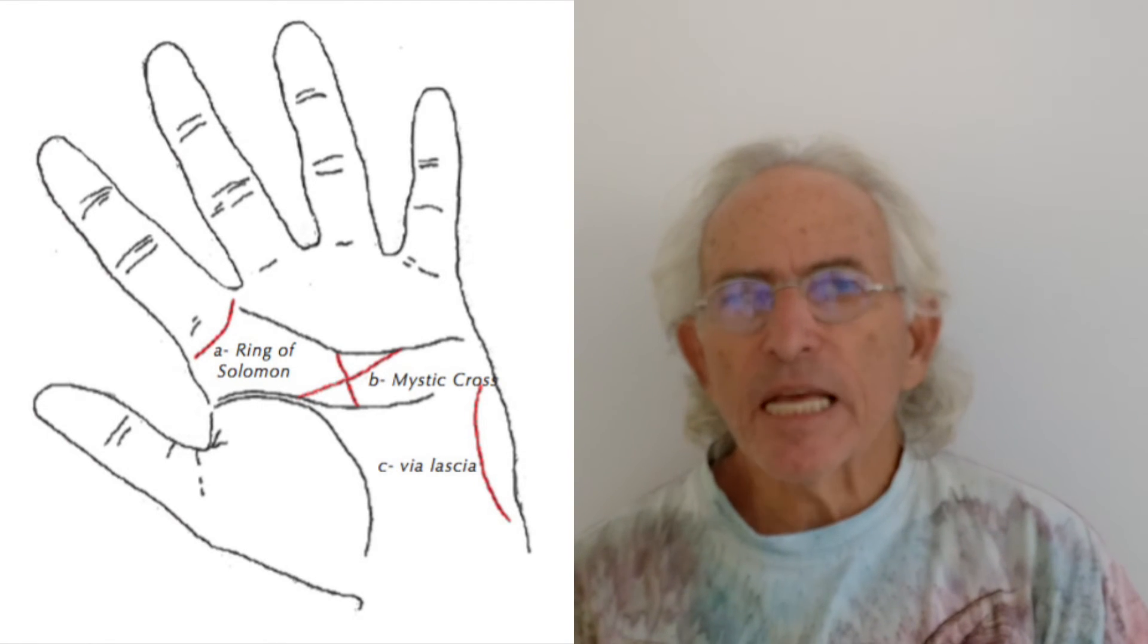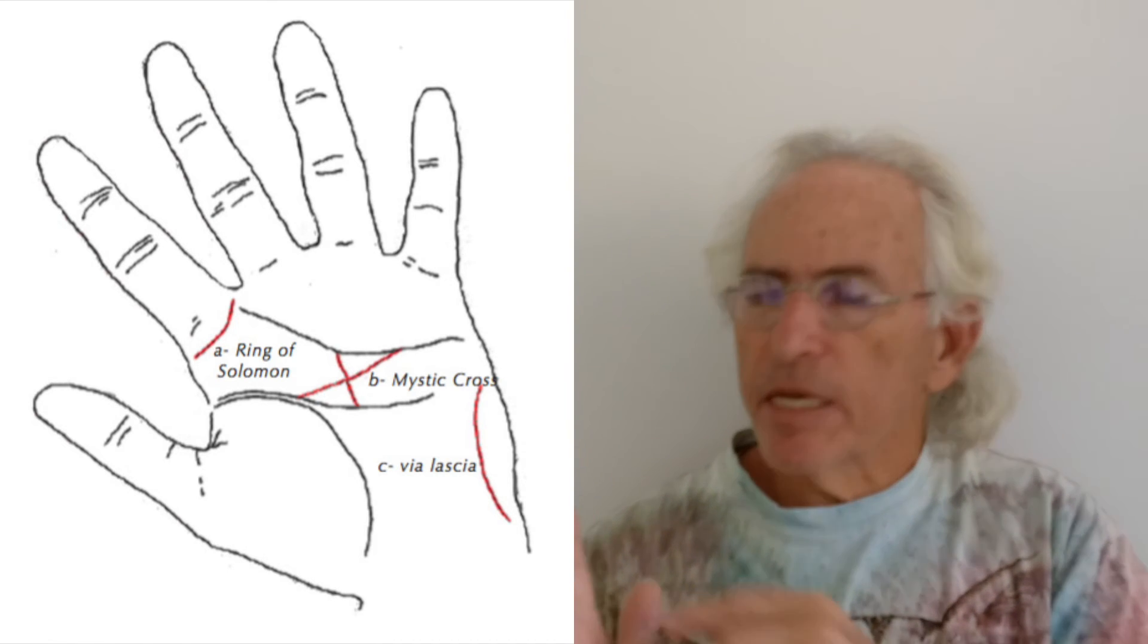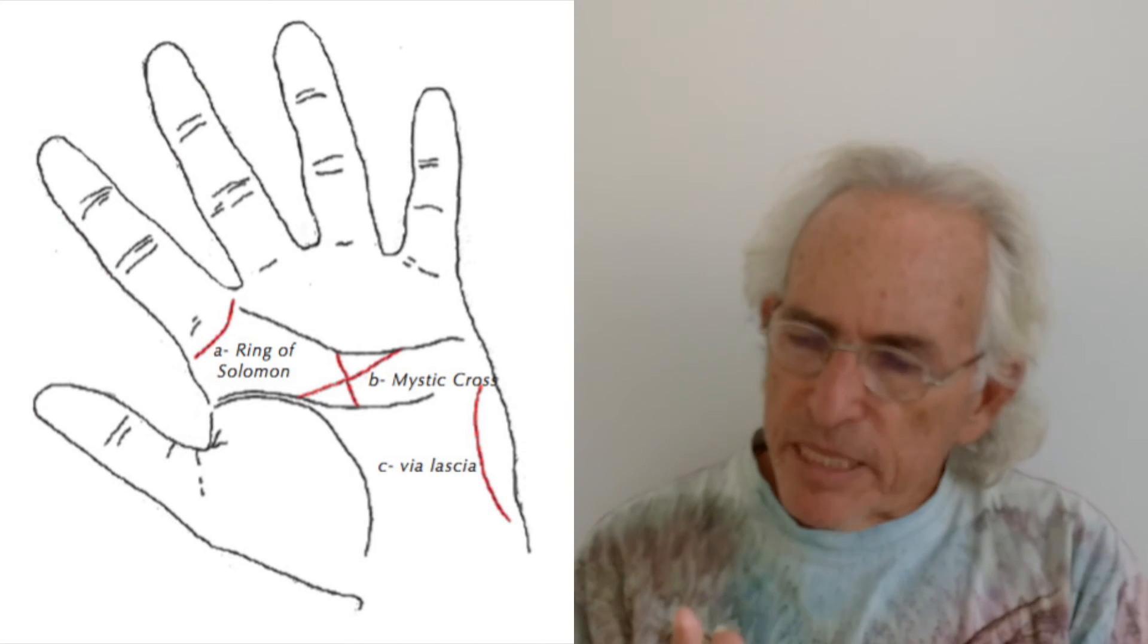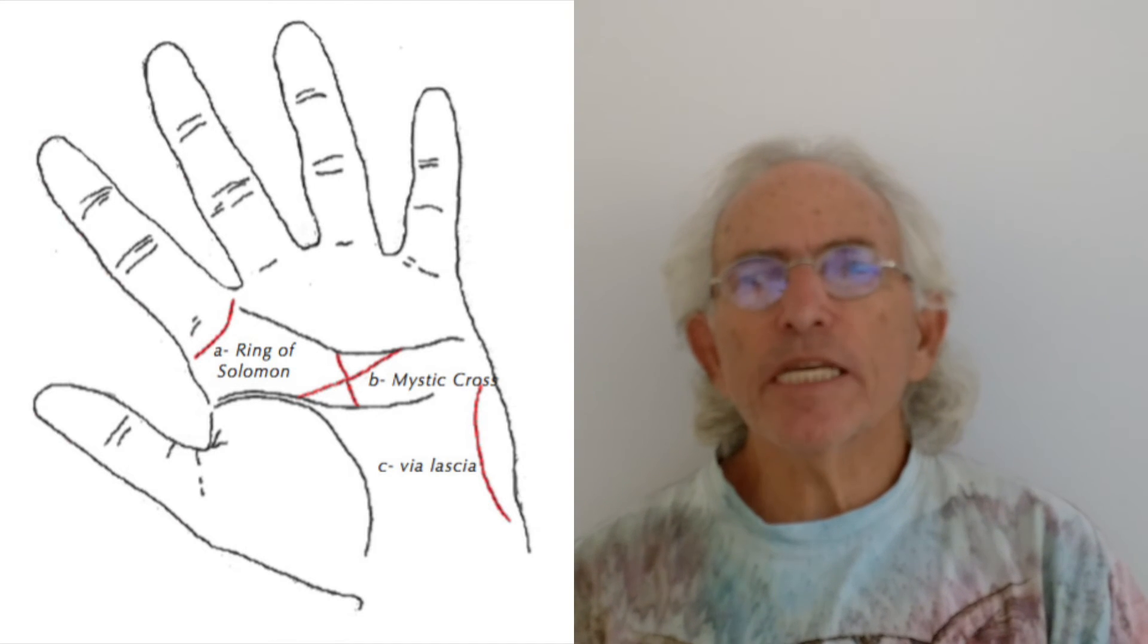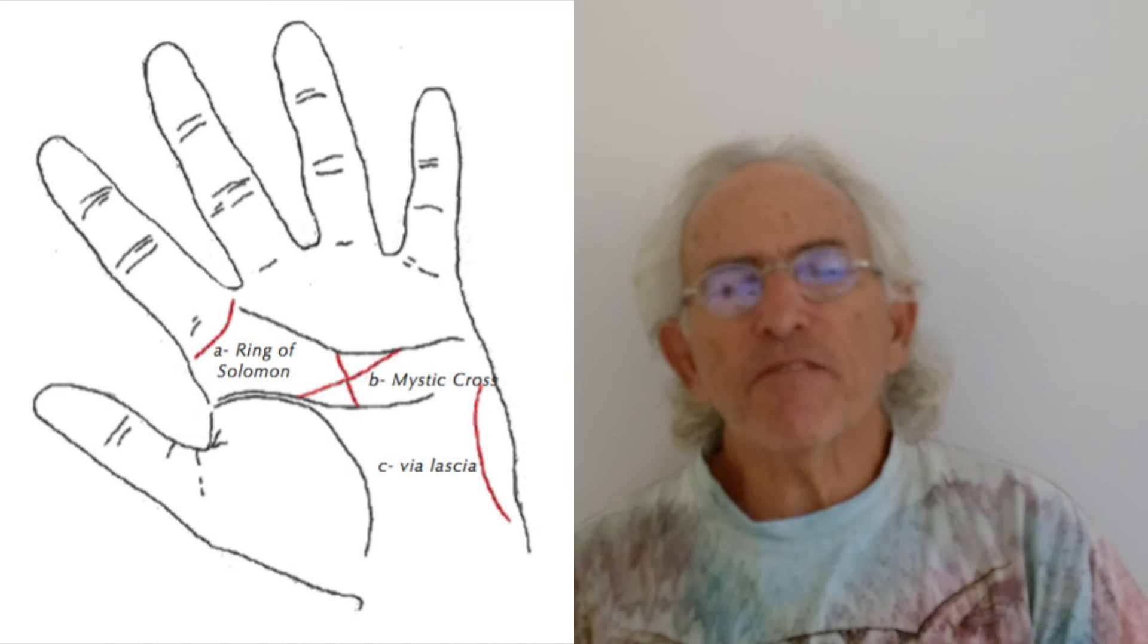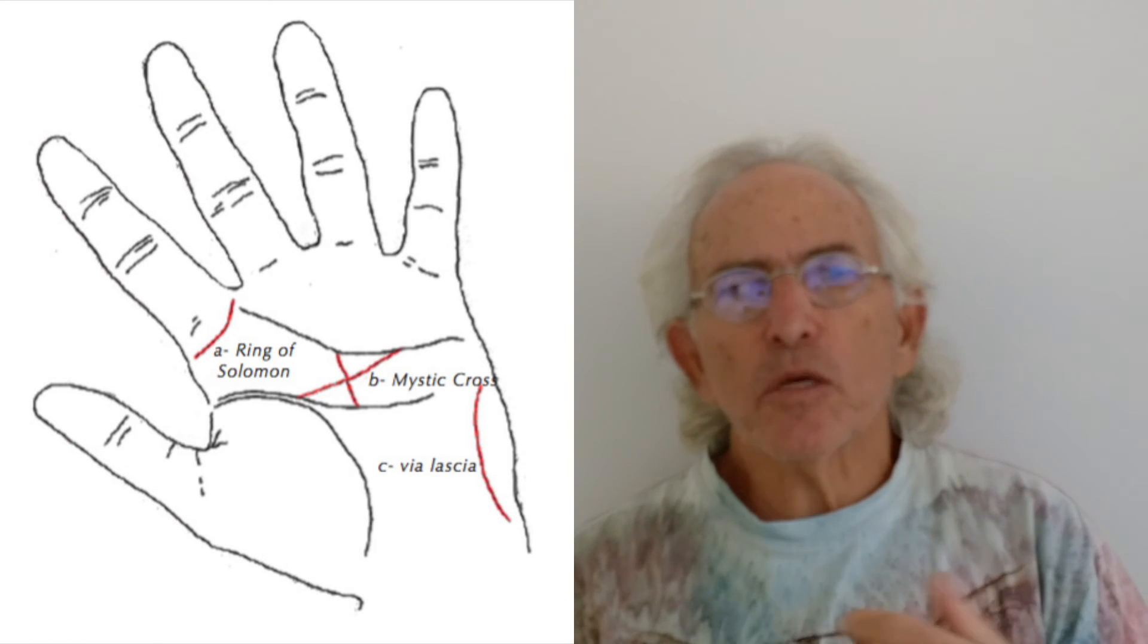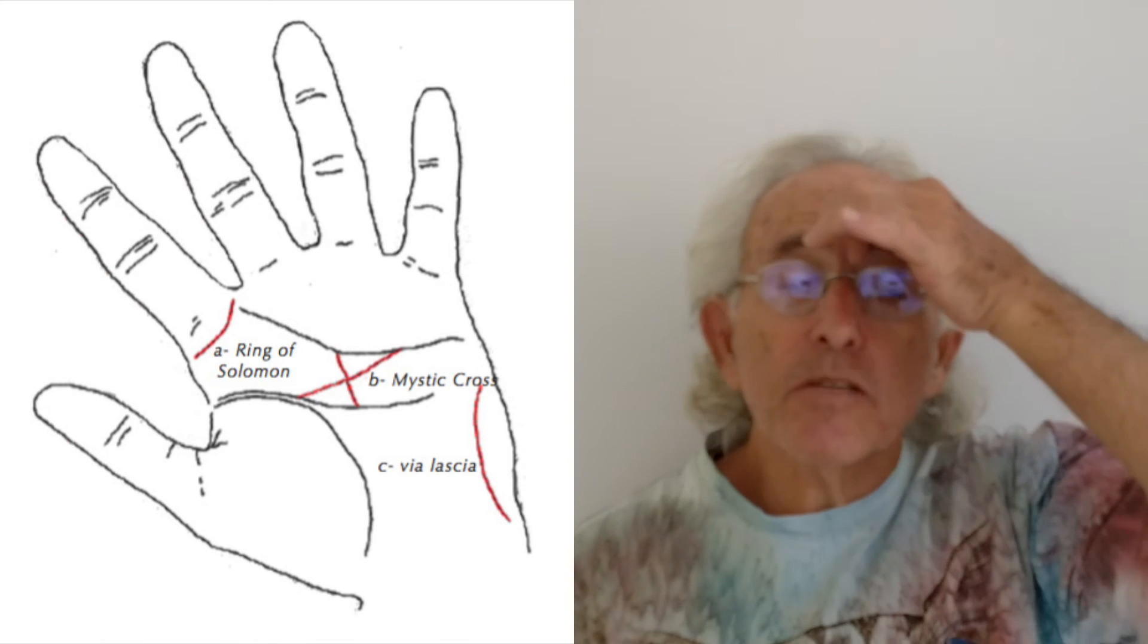And then I guess the last one which I will talk about is the Ring of Solomon. And that's a semicircle ring that is around the Jupiter finger. So when people have that, they don't find it very often. So it could be a complete circle or it could be a partial line. But when people have that, they're usually like the King of Solomon, they can give wise advice. And the reason they can give wise advice is because it comes from a deeper source. It's not just coming from their ego. So they're able to give good advice to people. And I would say that's fairly accurate when somebody has a Ring of Solomon.